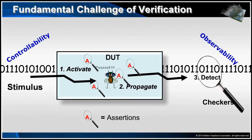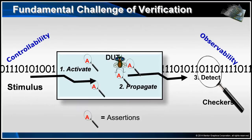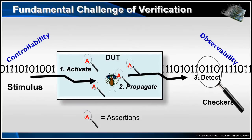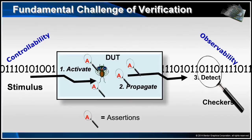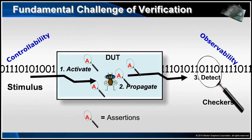We can further classify these fundamental conditions necessary for successful verification as controllability and observability. If any of these conditions are missing or incomplete, then we're likely to miss design bugs during the verification process. What we'll find is that assertions can help us with the observability problem and also the controllability problem.